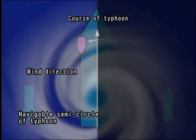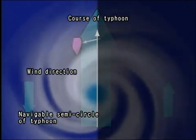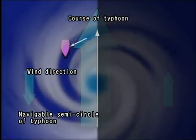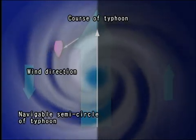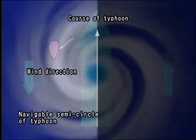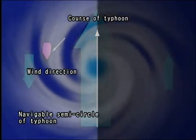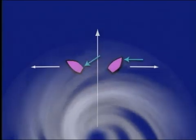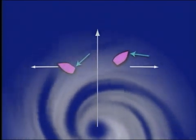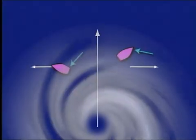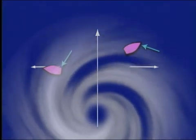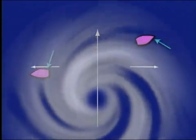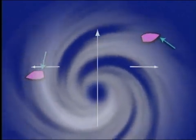When a ship is in the right semicircle, the wind presses the ship behind the typhoon. Nonetheless, even in a navigable semicircle, as it accompanies a storm area, proper caution is necessary. It is advised that the course is maintained to keep the wind at the starboard bow when in a critical semicircle, and at the starboard quarter when in the left semicircle, to turn away from the typhoon.